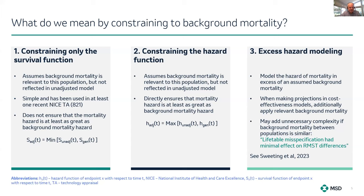Once we have the hazard constrained, we can then derive the survival. The third approach is excess hazard modelling, in which the mortality observed in the patient-level dataset is modelled as in excess of an assumed background mortality. This has been described in a valuable recent tutorial paper by Sweeting and colleagues at AstraZeneca and the Universities of Leicester and Sheffield. This potentially implies different survival models in every health system, and might be another nail in the coffin of the concept of a global economic model. However, this step might seem rather unnecessary, given that life table misspecification had a minimal effect on restricted mean survival time differences.